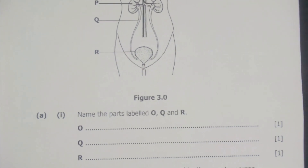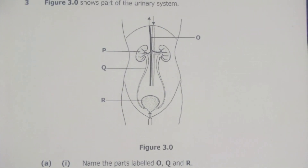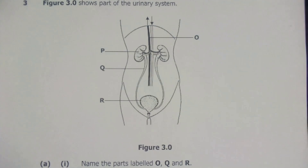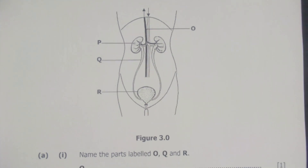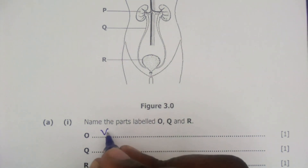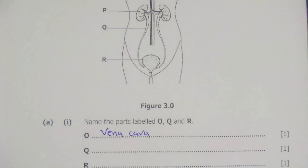The questions asked are simply to identify the parts labeled O, Q, and R. We have O here, and O is the major blood vessel which is taking blood back to the heart. The major blood vessel which takes blood back to the heart is the vena cava. So the part labeled O here is the vena cava.